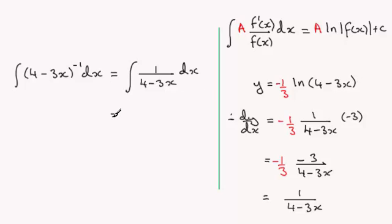So we end up with minus one third the natural log of, then don't forget always put this in mods when you're integrating, so that's 4 minus 3x, and then don't forget the constant of integration plus c. Okay?